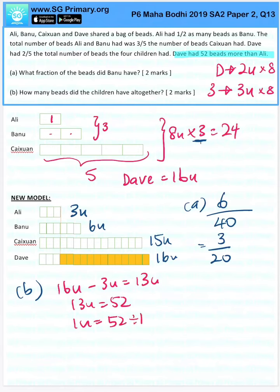One unit, 52 divided by 13 is four. Total number of units is 40. 40 times four equals 160.